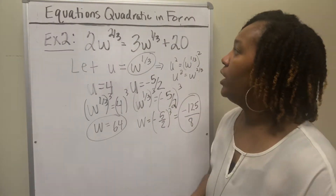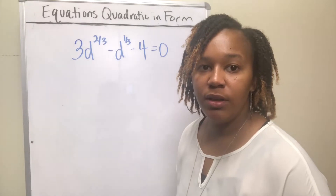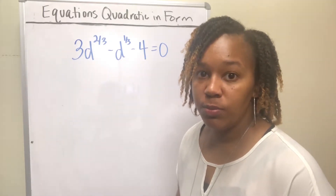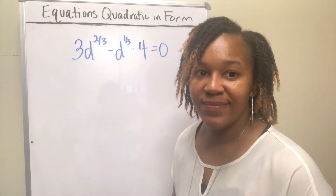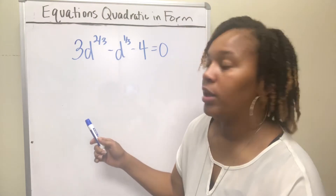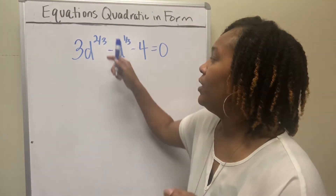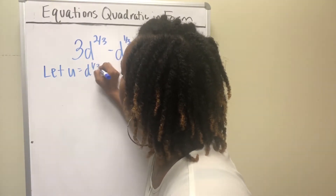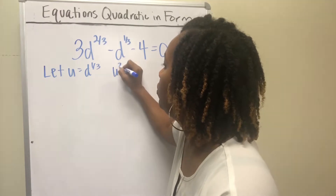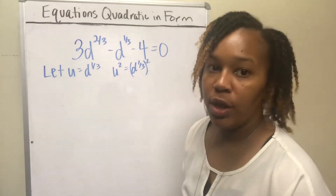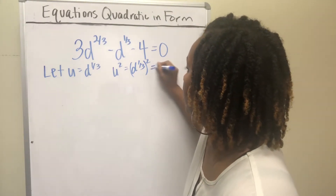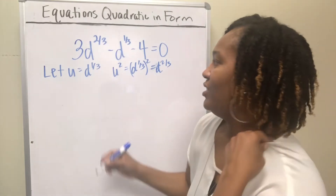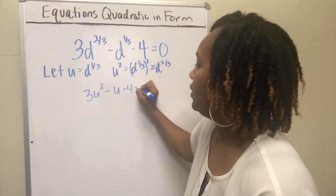This is how you solve that equation which is quadratic in form. Now pause the video and try to solve this equation — it is quadratic in form, so you'll have to use u-substitution. This is the case where the highest exponent is twice the smallest exponent. You want to let u equal the variable with the smallest exponent. So if u = d^(1/3), then u² = (d^(1/3))² = d^(2/3). So d^(2/3) becomes u² and d^(1/3) becomes u.